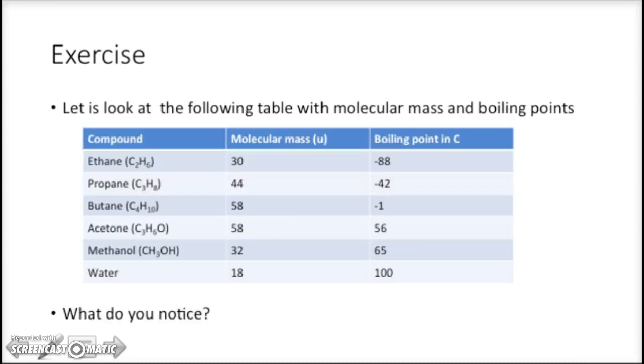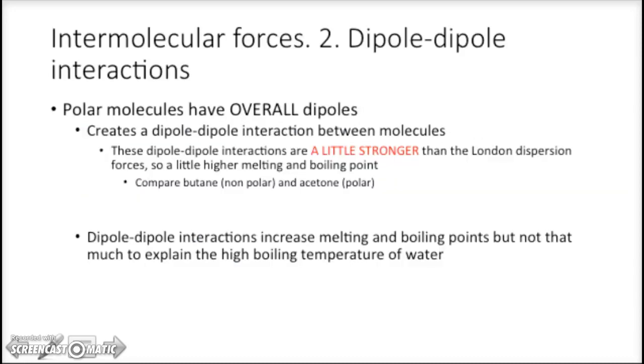And you can see here, butane 58 molar mass, acetone 58 molar mass, but the boiling point for butane is minus 1 celsius, compared to acetone 56. Butane is non-polar, and acetone is polar.